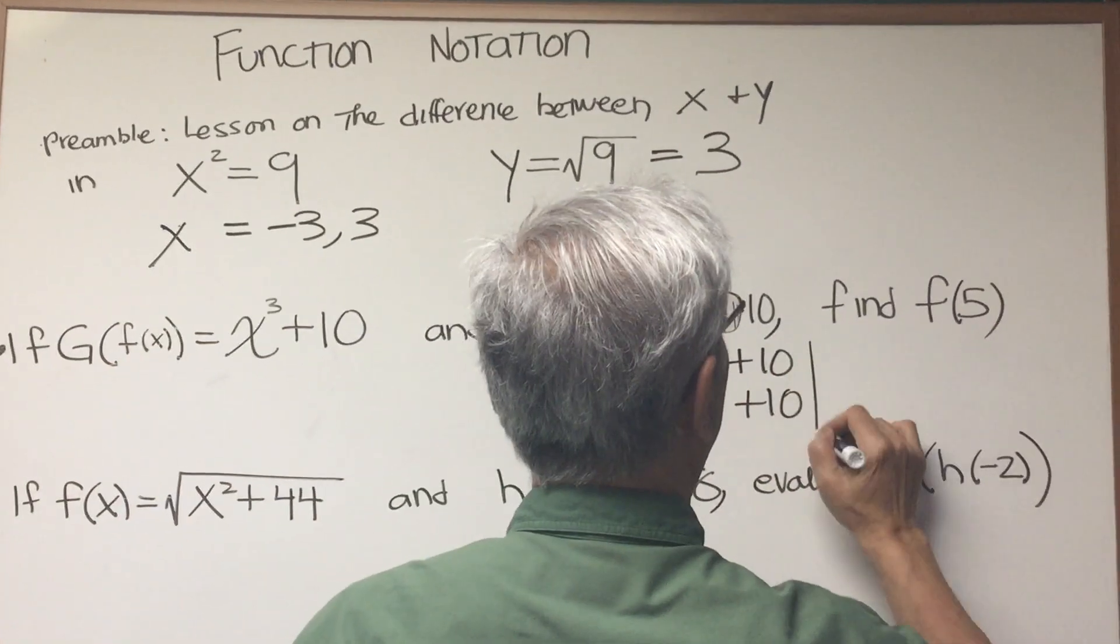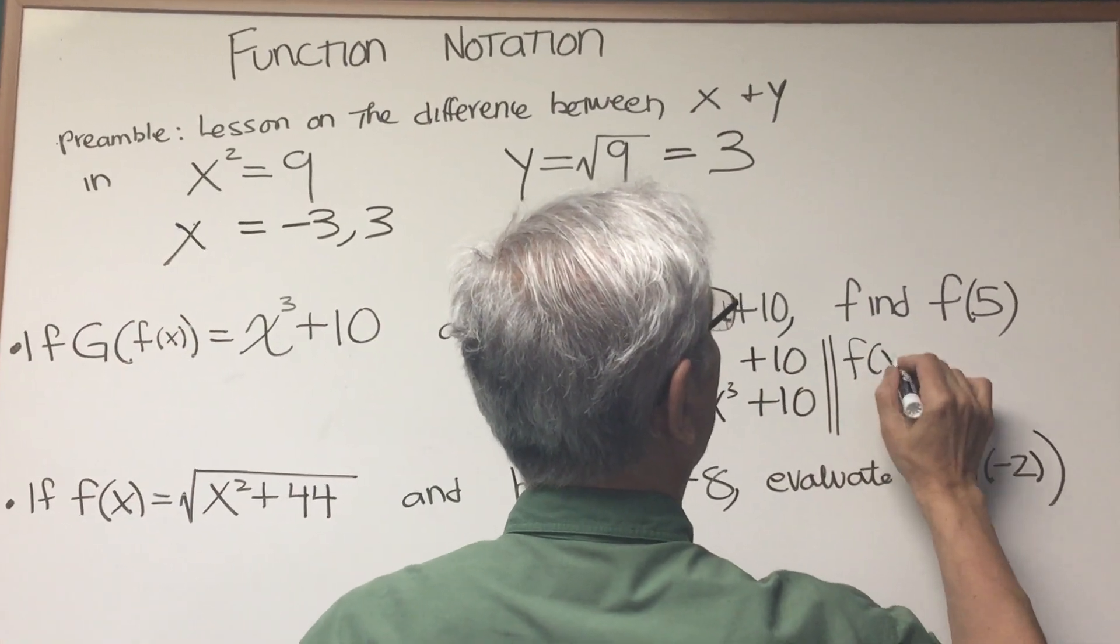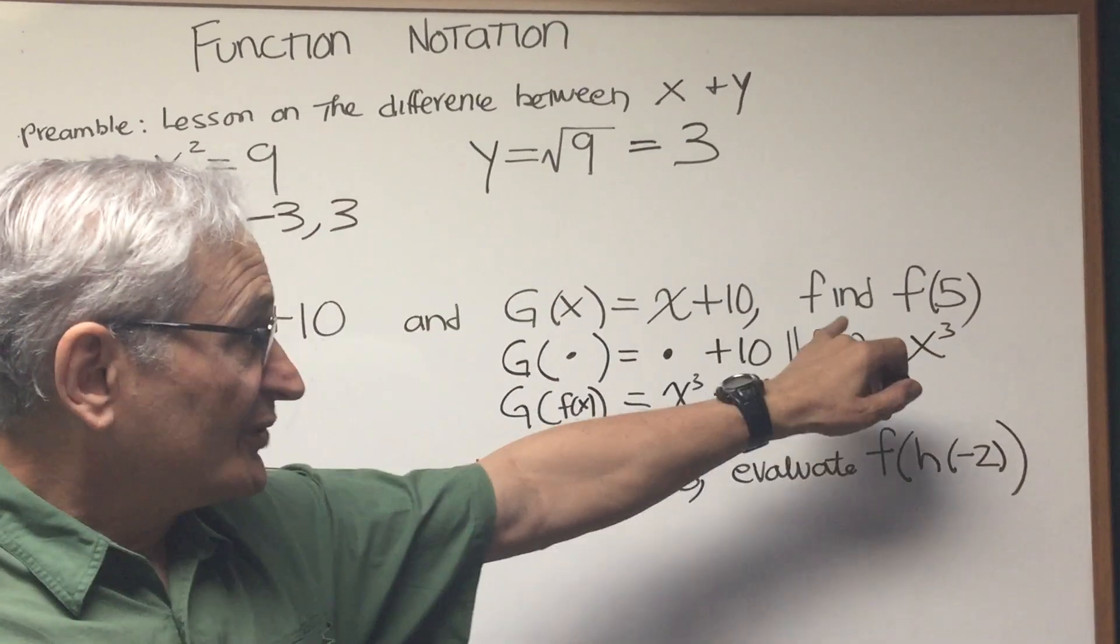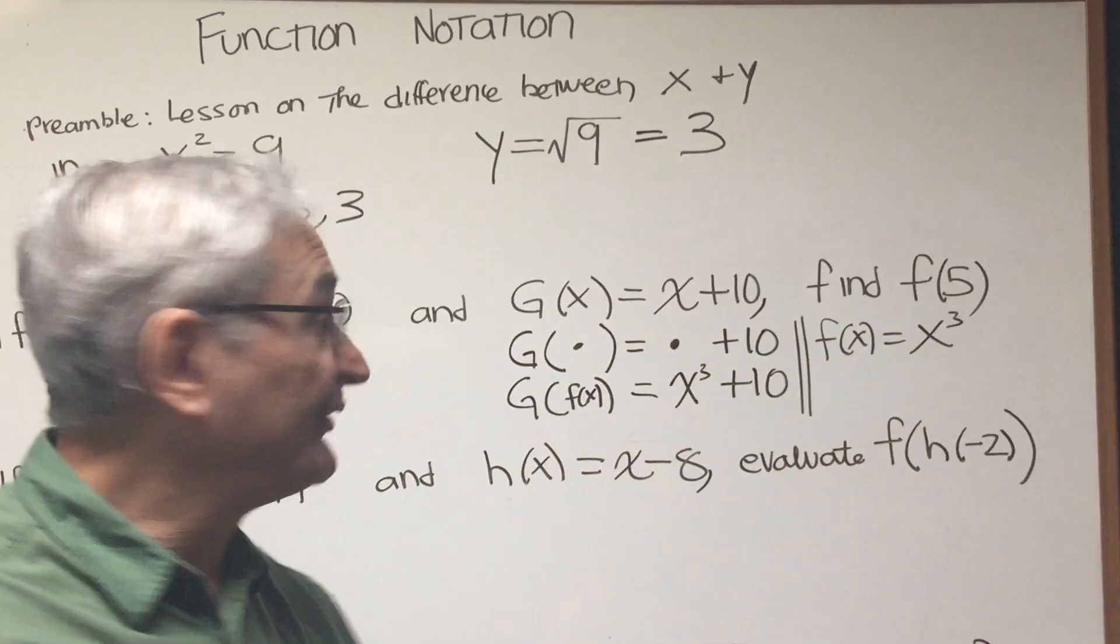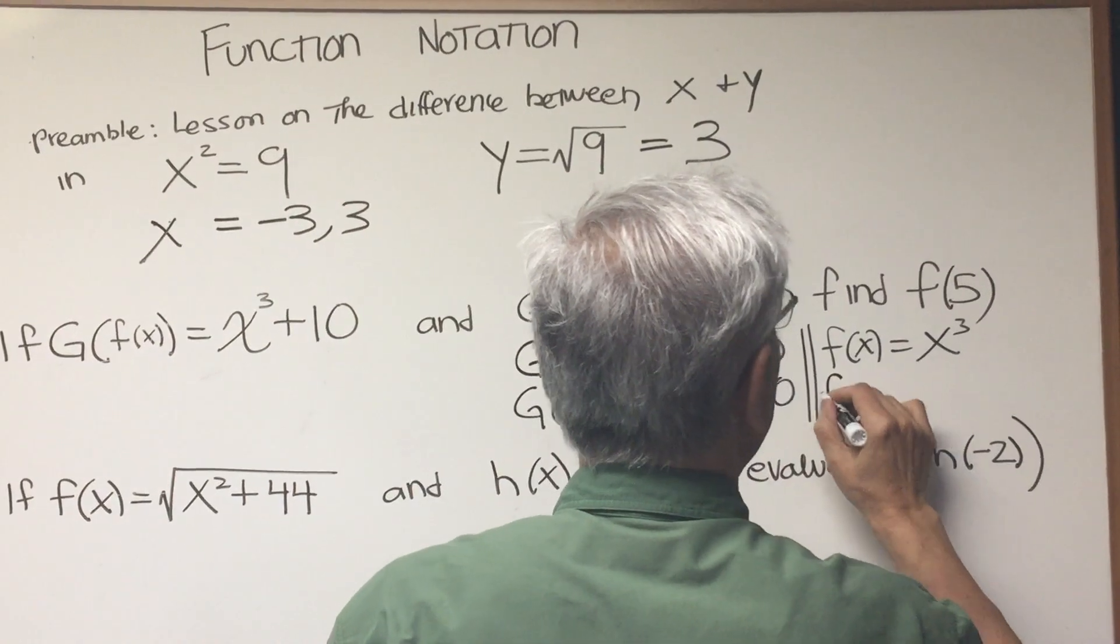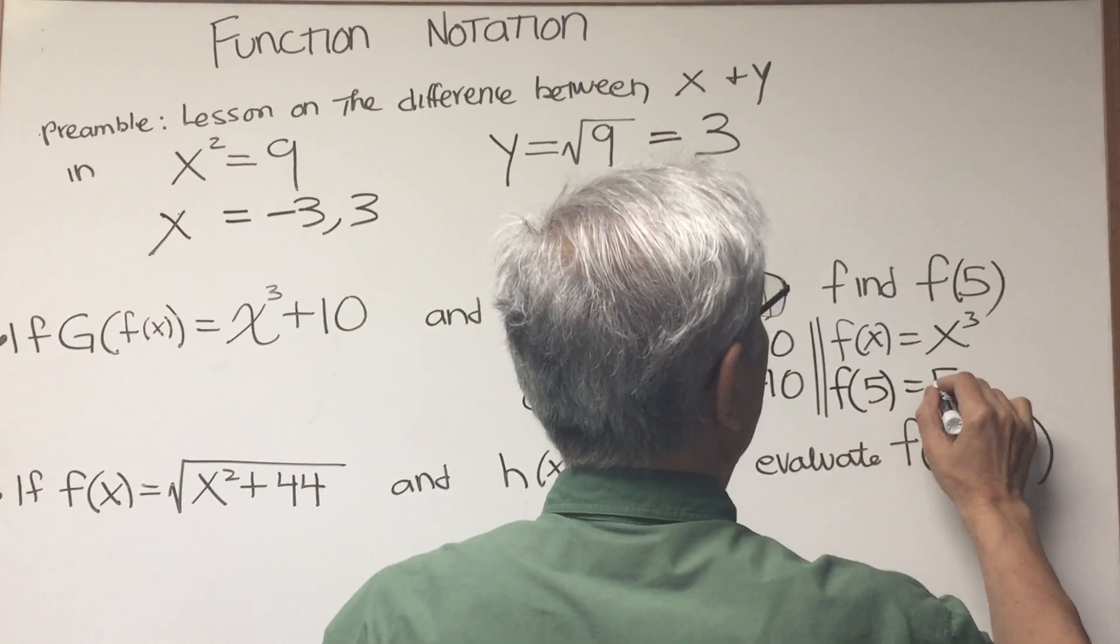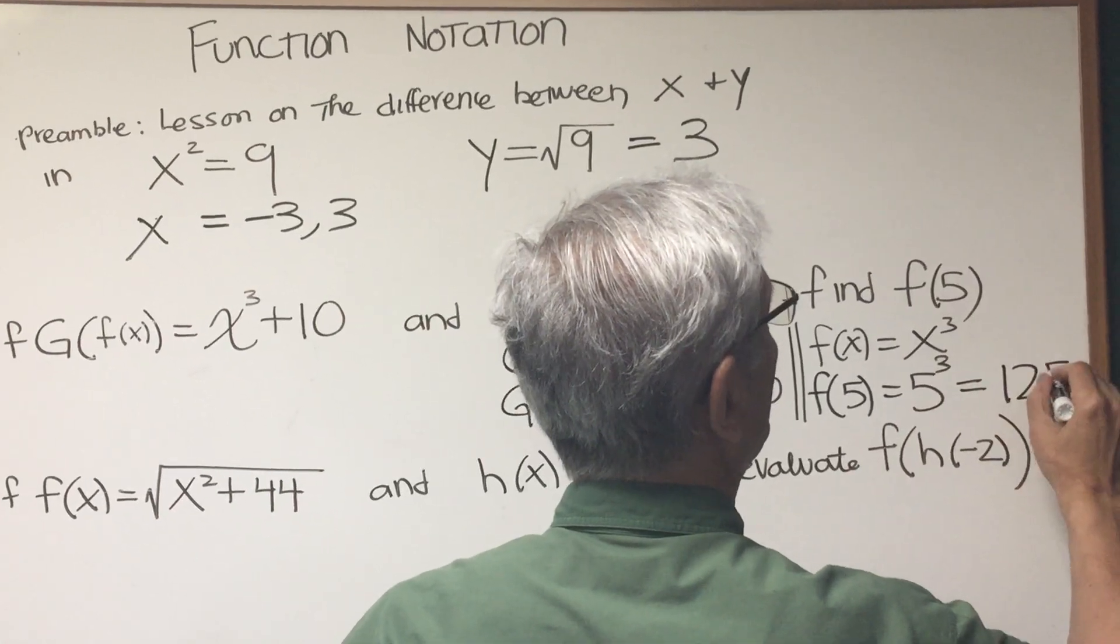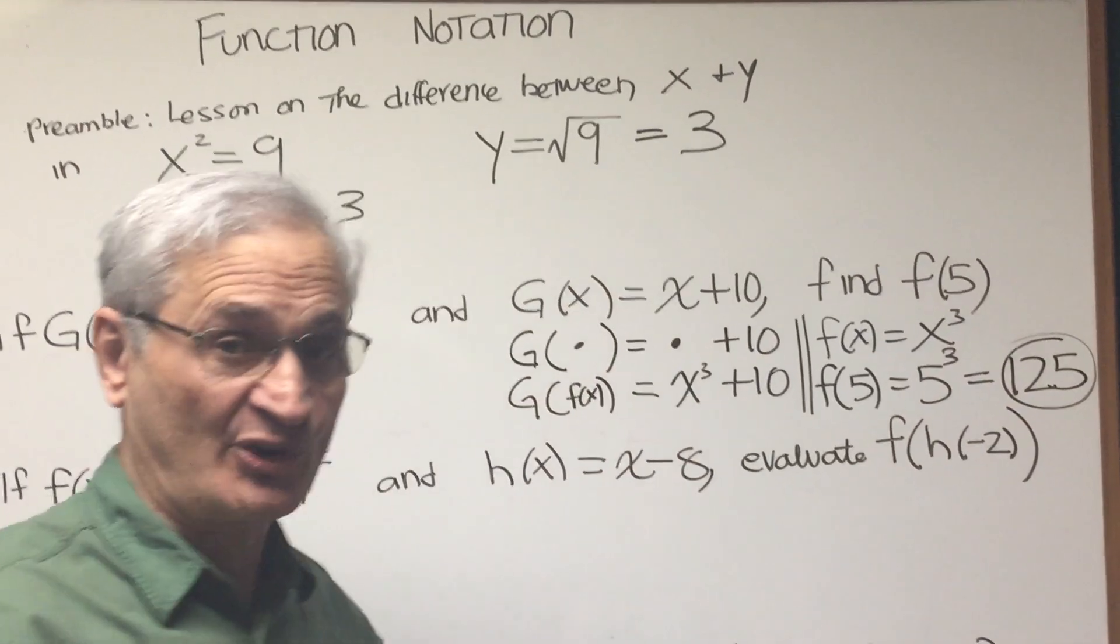So we know that as a result of this, f of x is equal to x to the third power. The problem asks us to find f of 5. Very easy. On the left, we replace x with 5. On the right, we replace x with 5. 5 to the third power is 125. There's our answer.